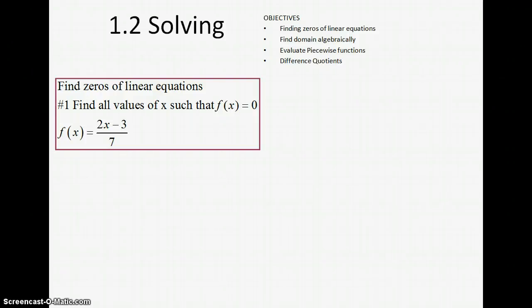We are going to start the solving unit, beginning by finding zeros. Remember on a graph, zeros are the x-intercepts — it's where the graph crosses the x-axis. Algebraically, we're going to start off finding where the function equals 0.